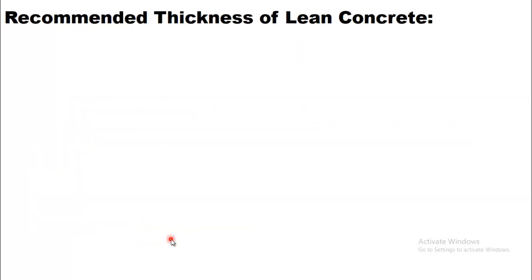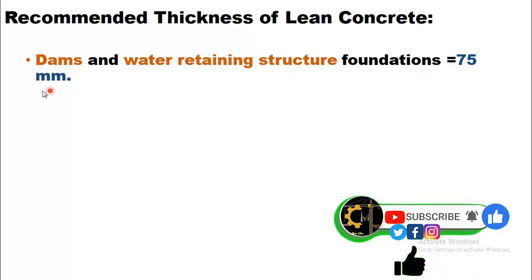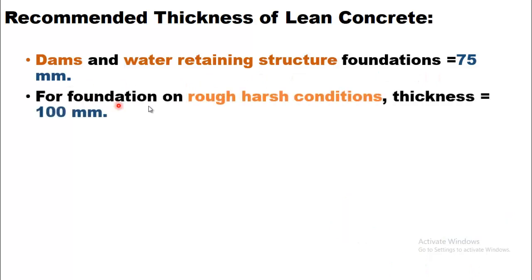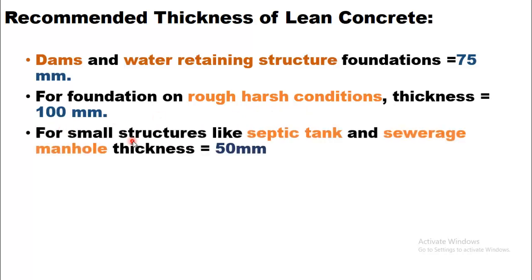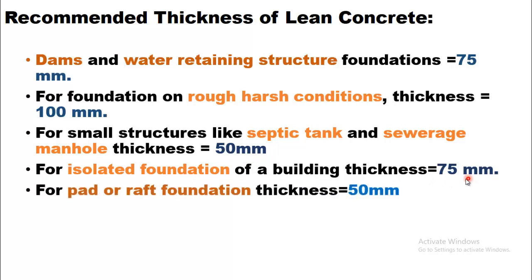What are the recommended thicknesses for lean concrete? For dams and water-retaining structure foundations, the thickness of lean concrete should be 75 mm. For foundations in rough or harsh conditions, the thickness should be 100 mm. For small structures like septic tanks and sewerage manholes, the thickness should be 50 mm. For isolated foundations of a building, the thickness should be 75 mm, and for paired or rough foundations, the thickness should be 50 mm.